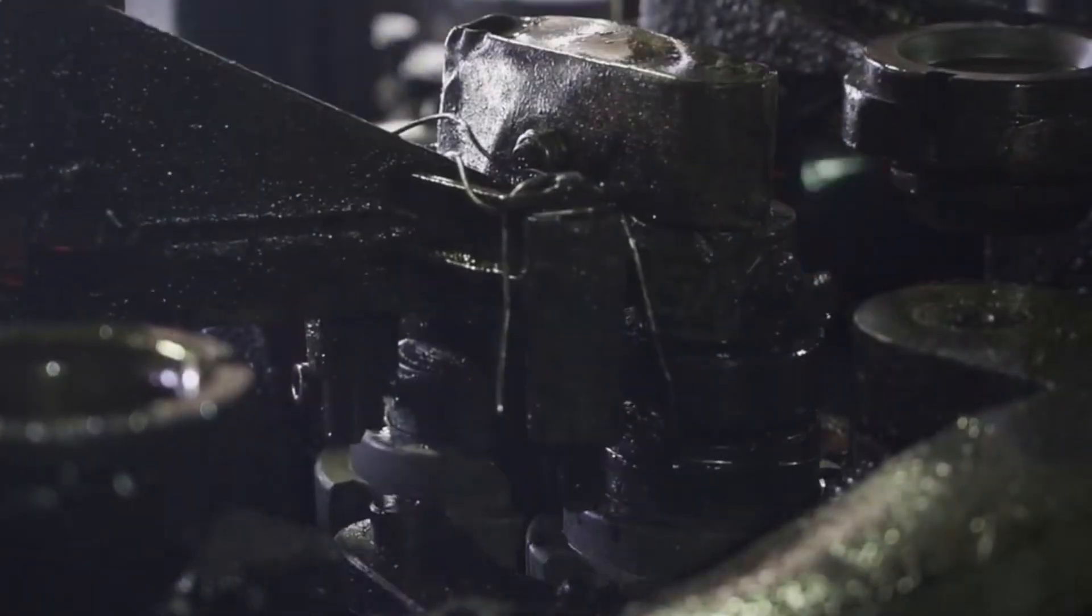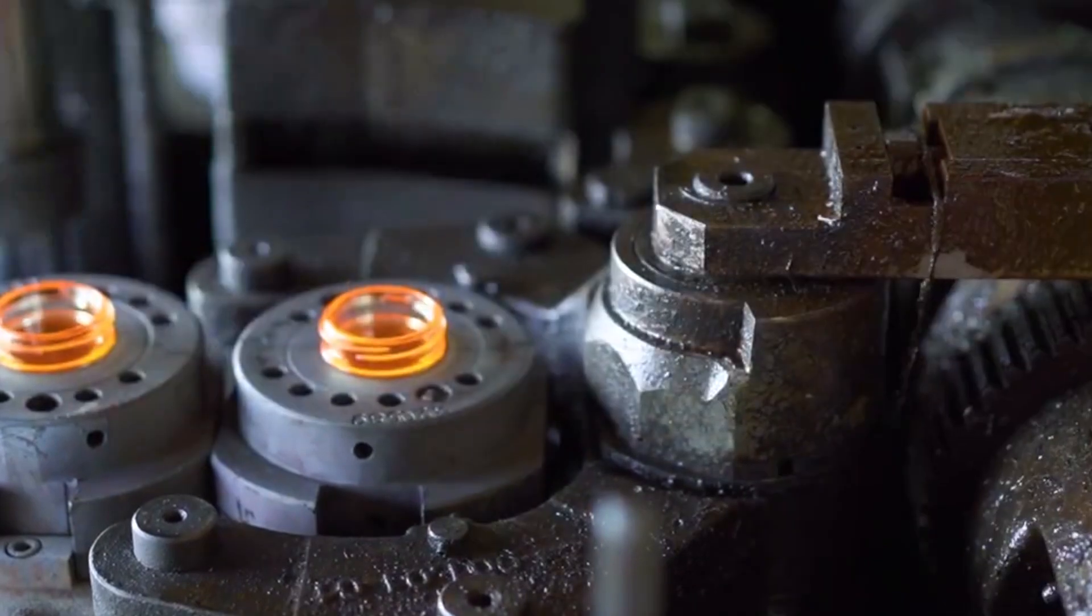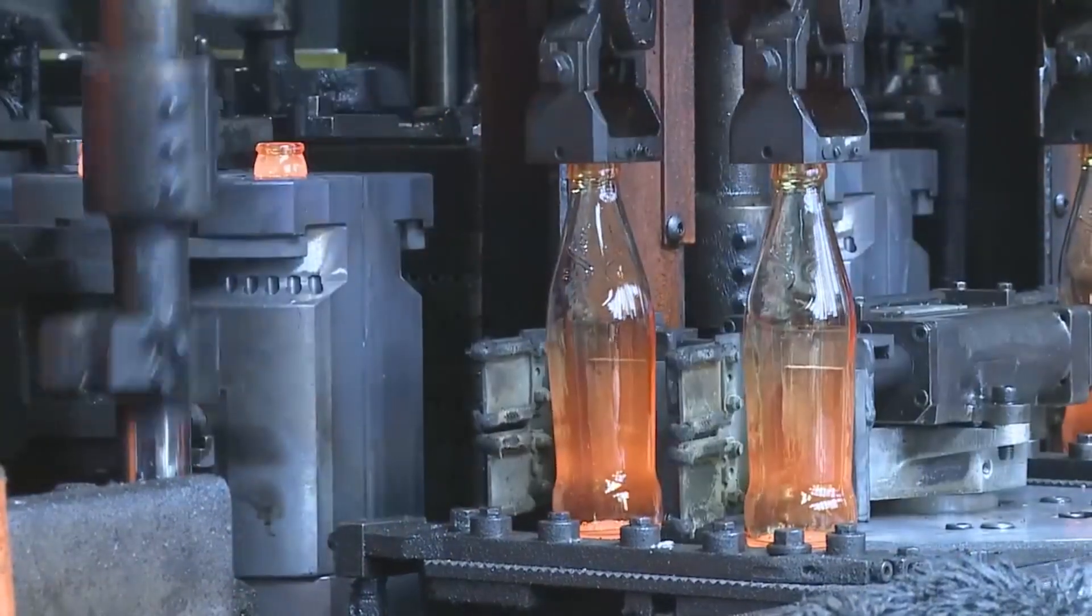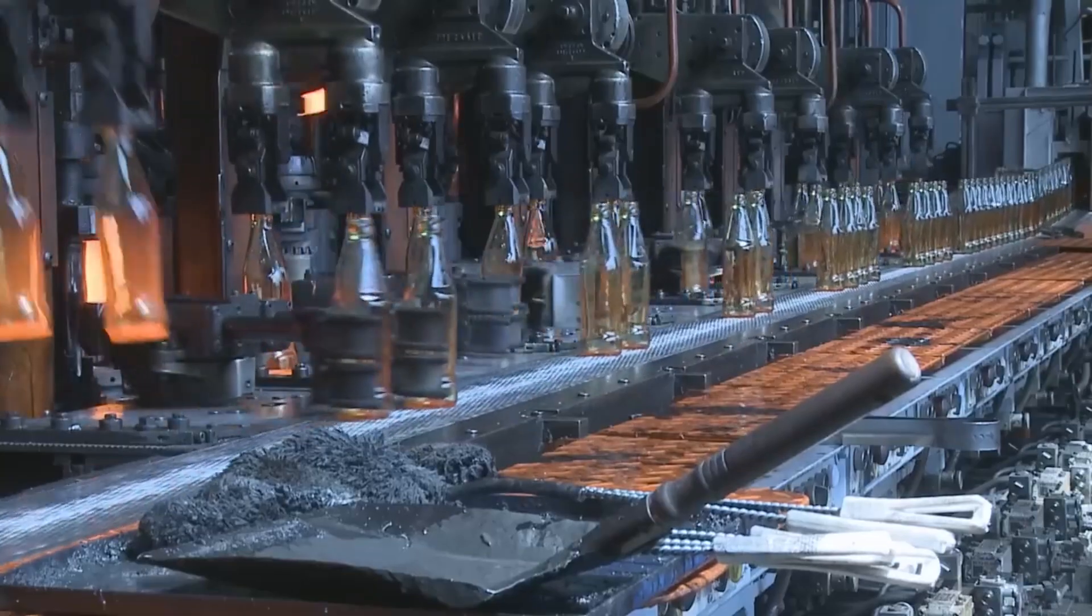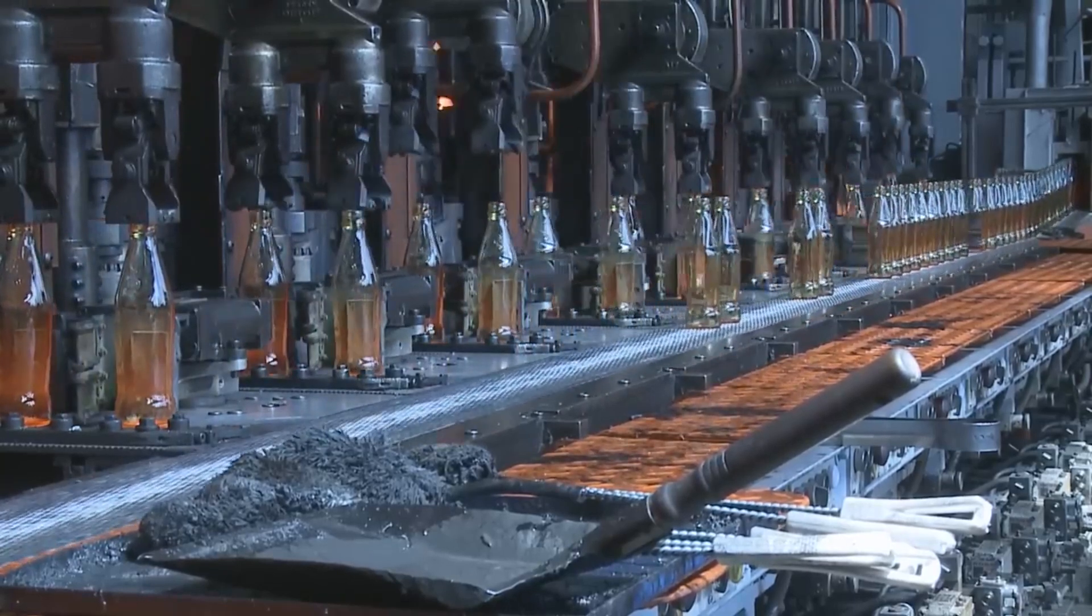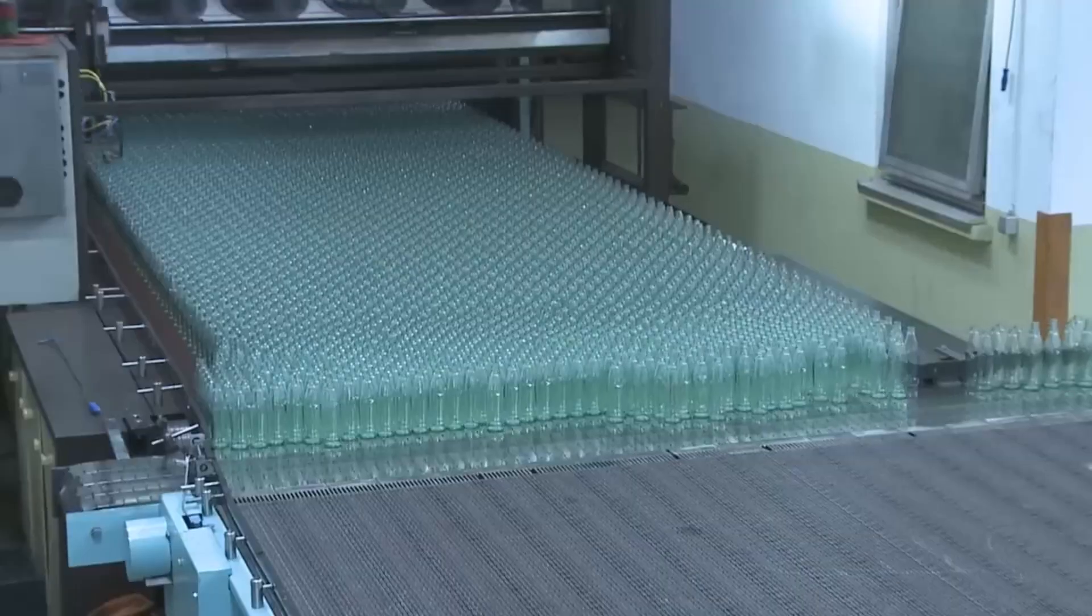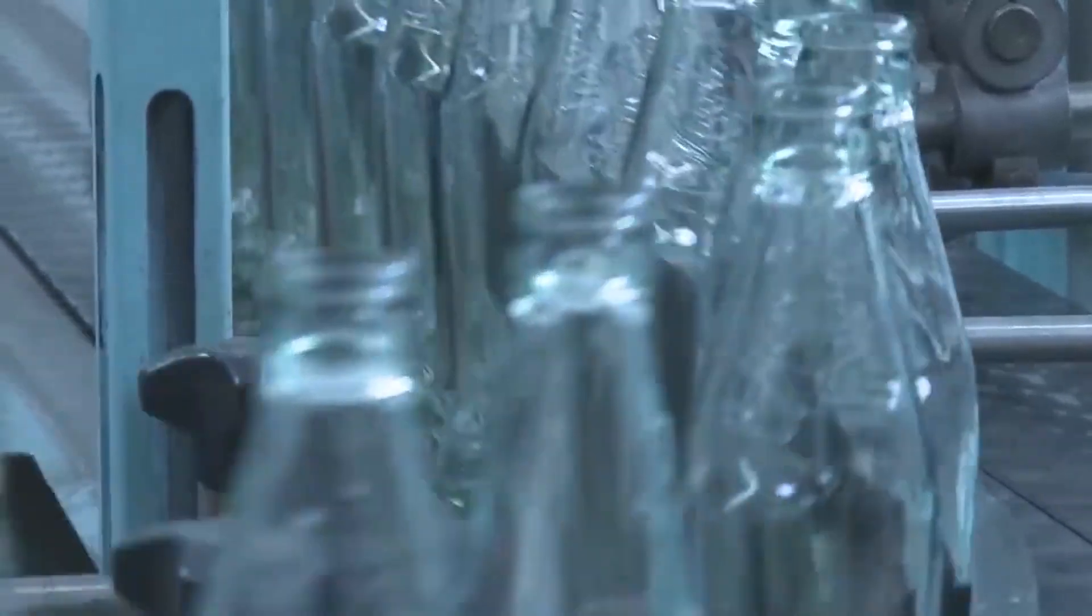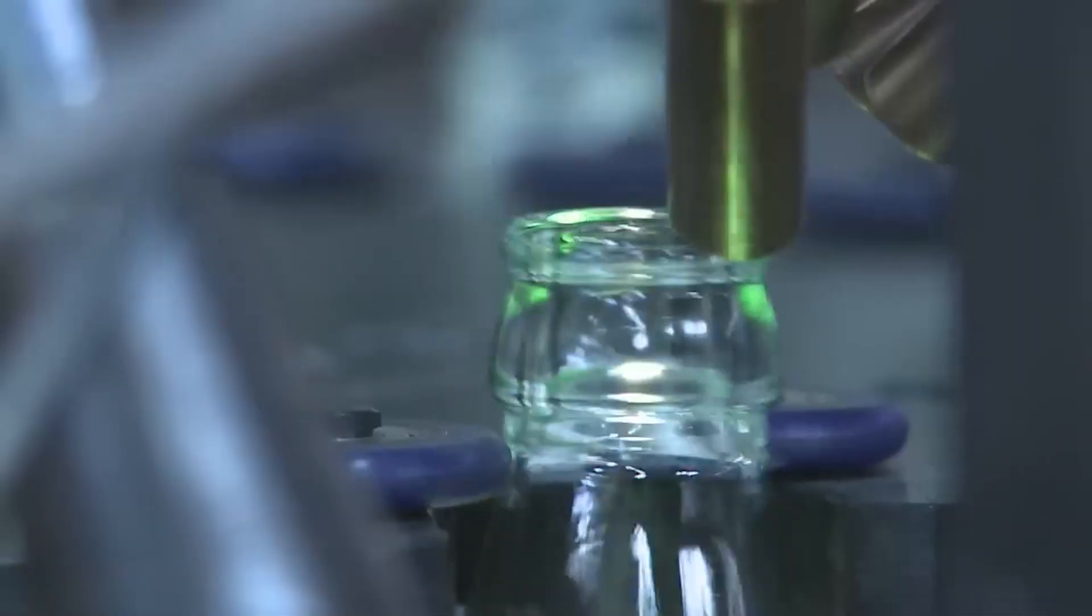As the molten glass bottles take shape, the journey towards their final form enters a critical phase, cooling and annealing. In this section, we delve into the precise process that ensures the bottle's strength, stability and longevity. The newly formed glass bottles are carefully transferred to a controlled cooling environment. This is where the delicate balance between time and temperature plays a vital role. In this cooling chamber, the temperature is gradually reduced, allowing the bottles to solidify and settle into their permanent structure. This controlled cooling is crucial to prevent thermal stresses that could weaken the glass. But cooling alone is not enough. To further enhance the strength and durability of the glass bottles, a process called annealing takes place.